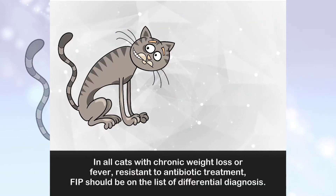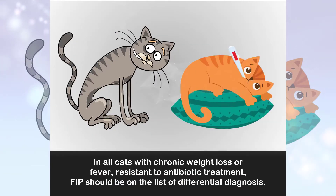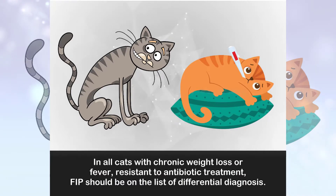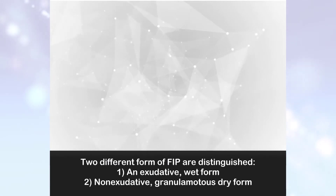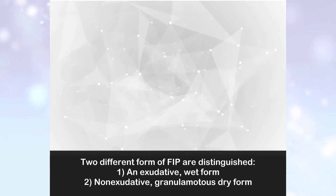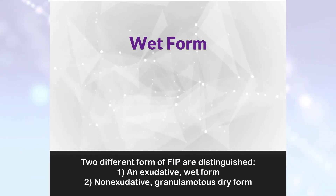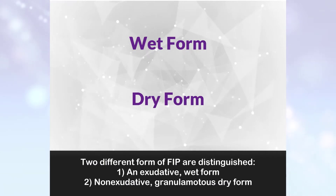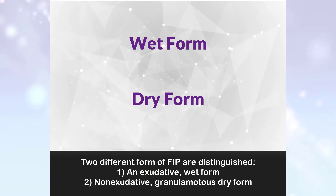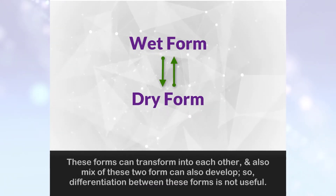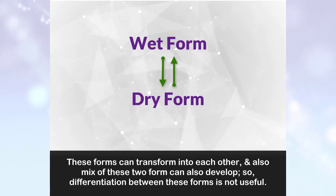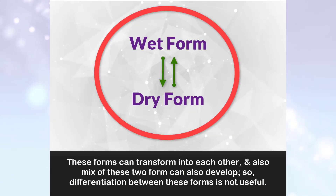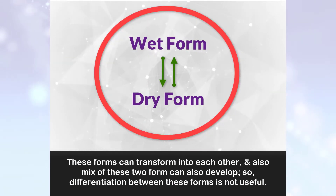In all cats with chronic weight loss or fever resistant to antibiotic treatment, FIP should be on the list of differential diagnoses. Two different forms of FIP are distinguished: number 1, an exudative wet form; number 2, a non-exudative granulomatous dry form. These forms can transform into each other, and a mix of the two forms can also develop.